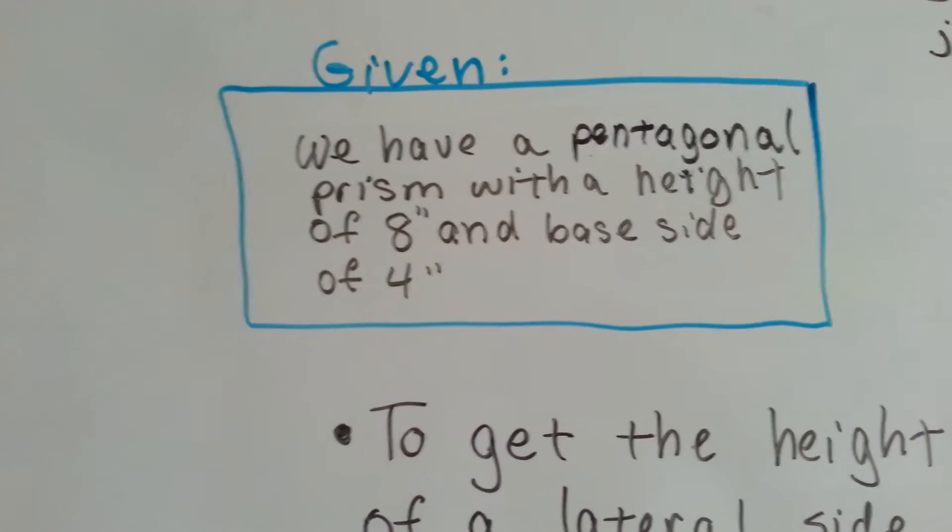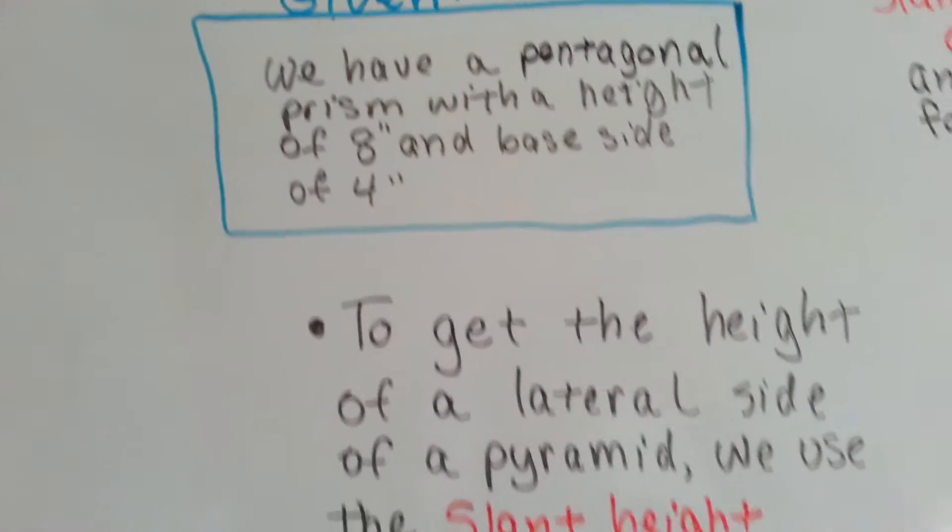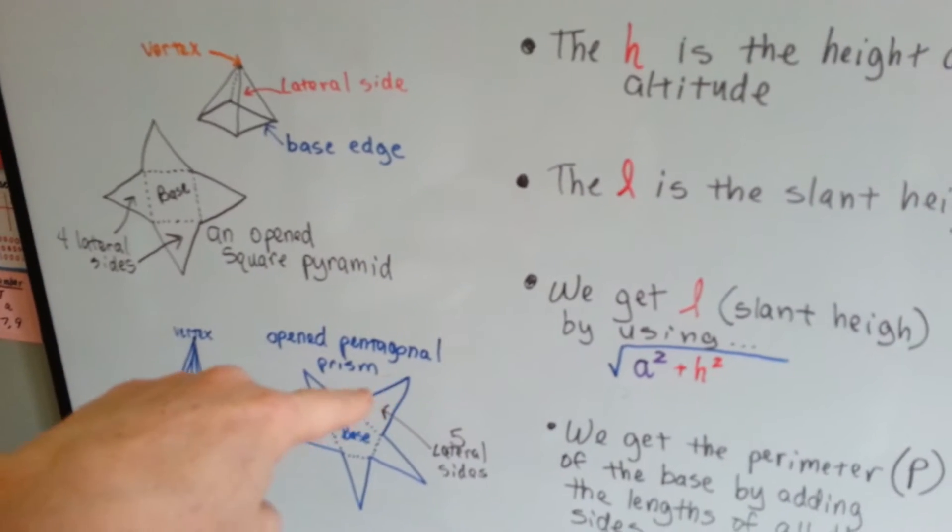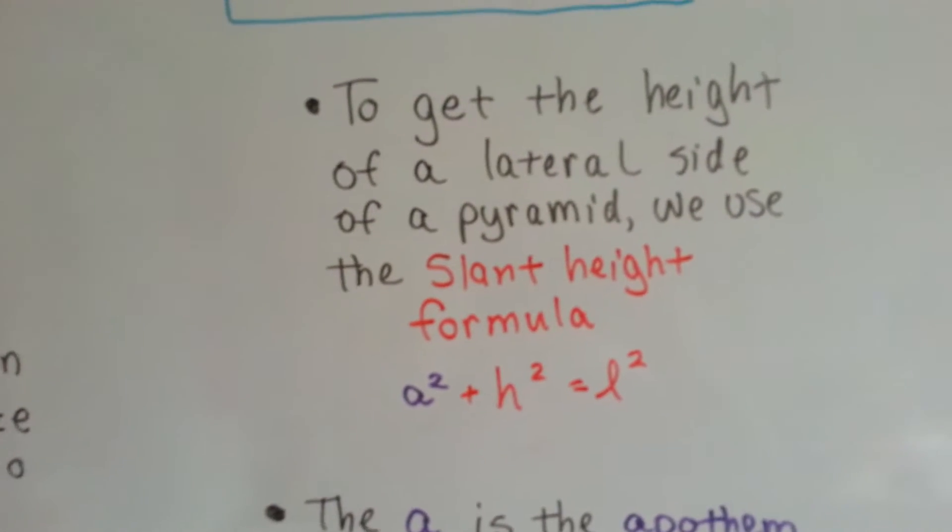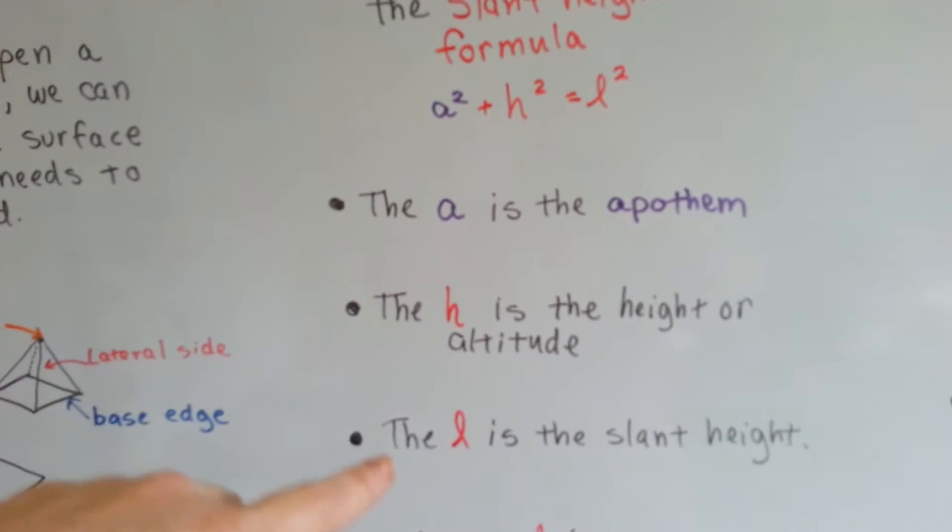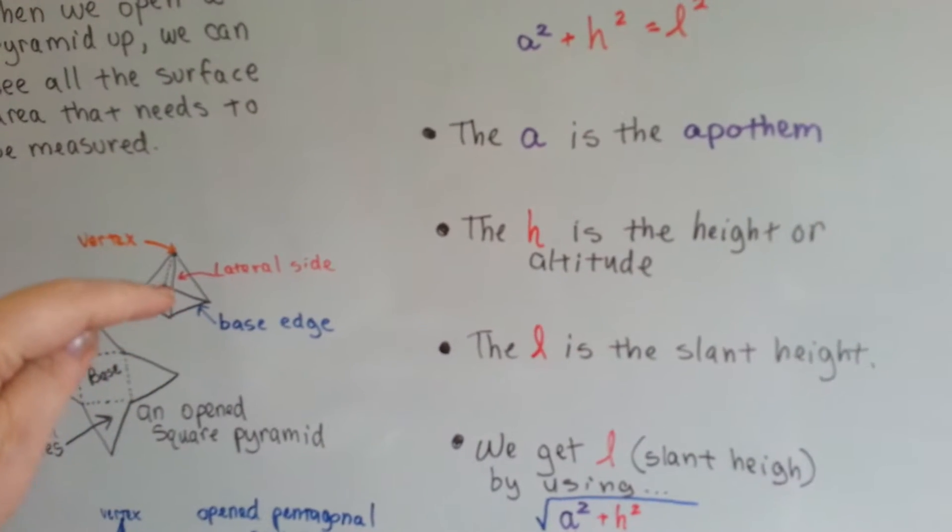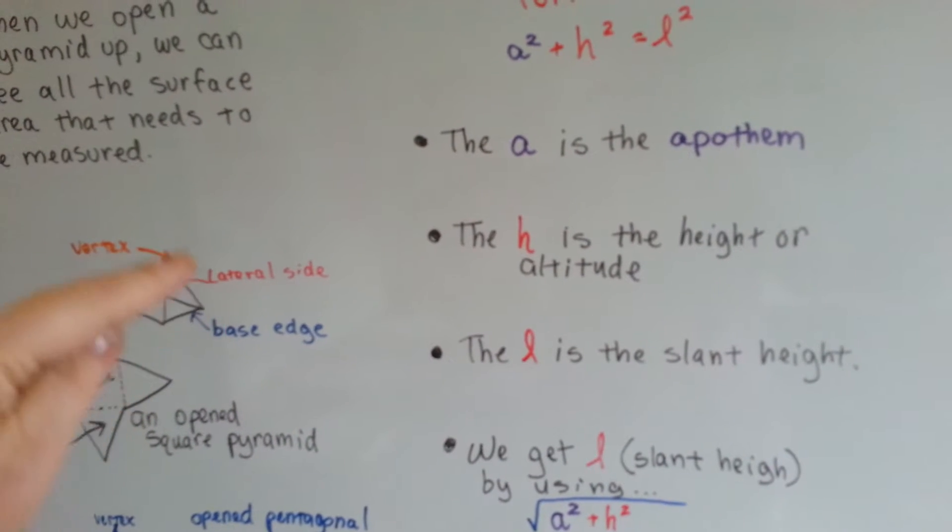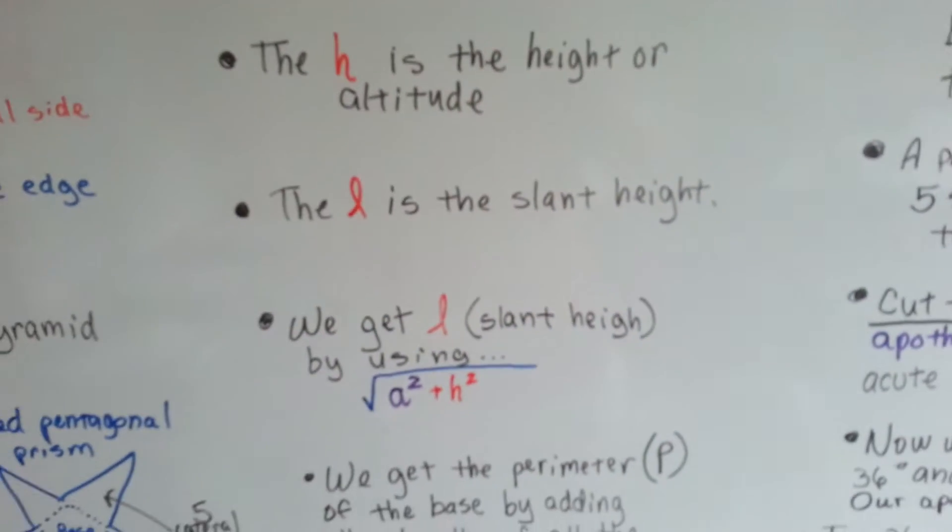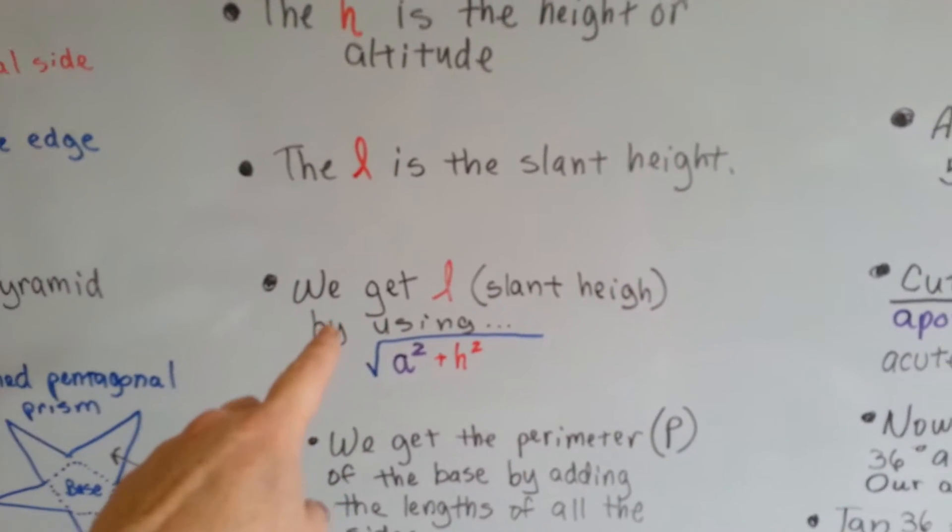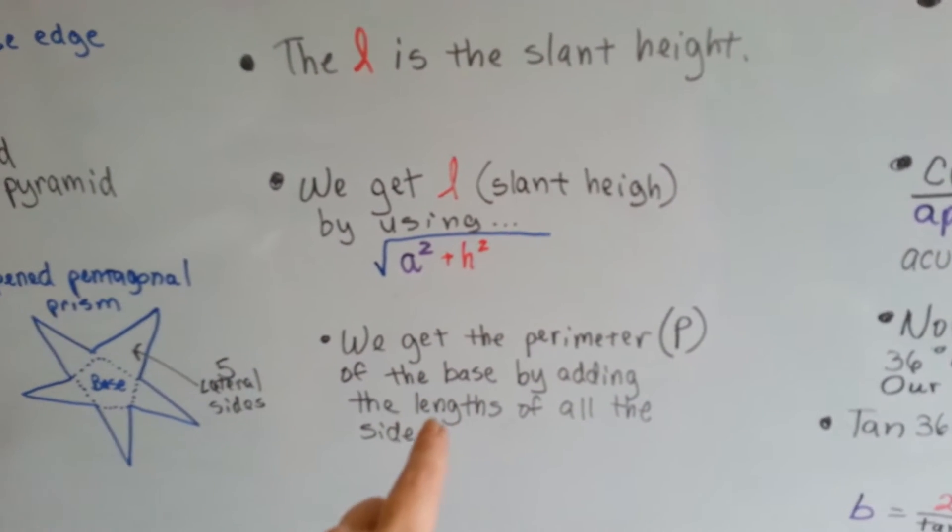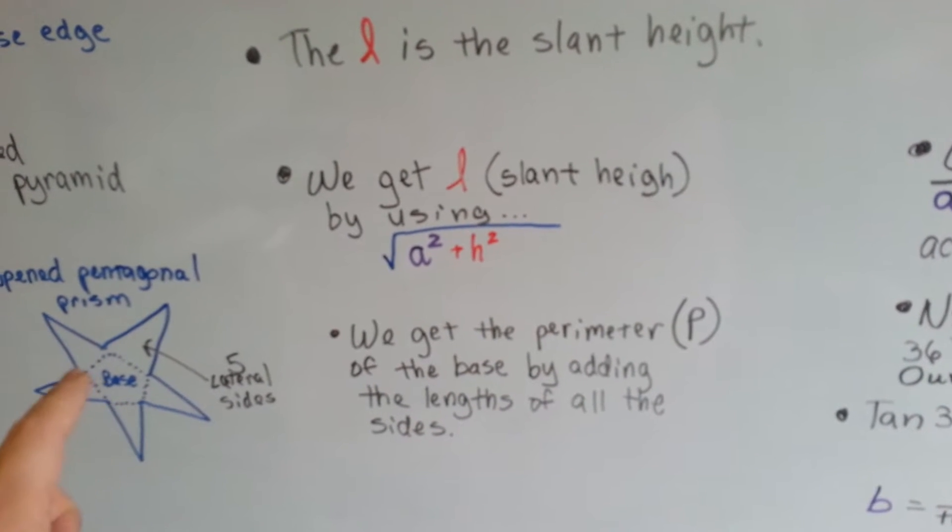What we've got is a pentagonal prism with a height of eight inches, and its base sides are four inches. To get the height of a lateral side, that's one of these slanted sides, we need the slant height formula, which is a squared plus h squared equals l squared. The a is the apothem, the h is the height or the altitude, and the l is the slant height. The altitude is from the center of the base straight up. The slant height is the height of the slanted lateral side, so it's two different heights. They're not the same. We get the slant height by using the square root of the apothem squared plus the height squared.